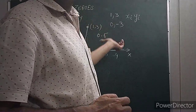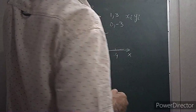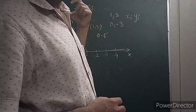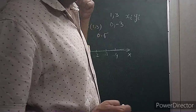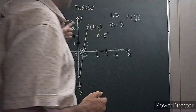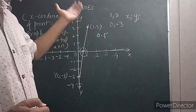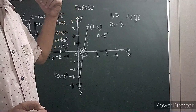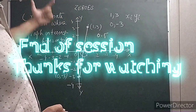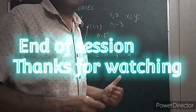This is the graphical way of finding out the zero of the linear expression. Next, I am going to explain how to find out the zero of the quadratic polynomial with the help of the graphical method. Thank you.